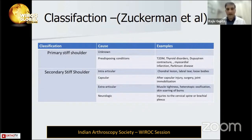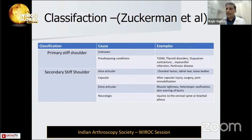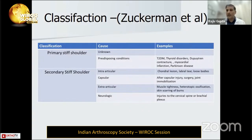Secondary stiff shoulder may occur after surgery — rotator cuff or instability surgeries. There are also loose bodies, chondral lesions, and extra-articular causes including scar formation around the shoulder joint due to burns, muscle tightness, heterotrophic ossification, neurological conditions like brachial plexus injuries, and head injuries.